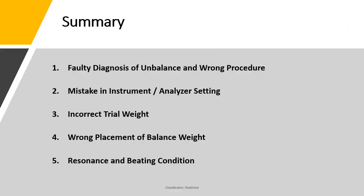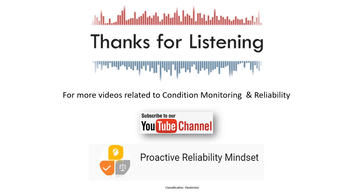To summarize, the five reasons why balancing can fail in the field are: first, false diagnosis of unbalance and wrong procedure; second, mistakes in instrument or analyzer settings; third, incorrect trial weight; fourth, wrong placement of balance weights; and fifth, resonance and beating conditions. Understanding and avoiding these mistakes will help you succeed in your next balancing job. Thank you for your time — for more videos on condition monitoring and reliability, please subscribe to the YouTube channel Productive Reliability Mindset.